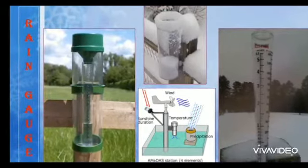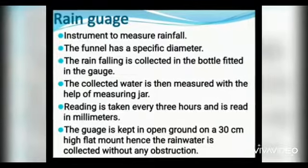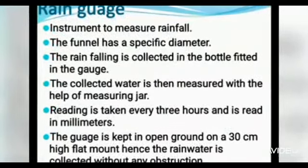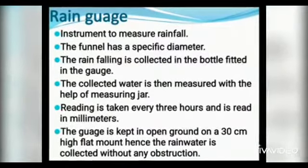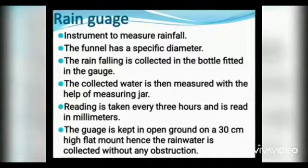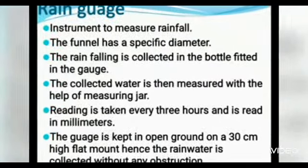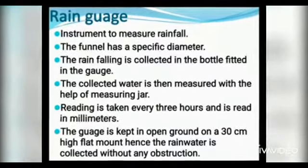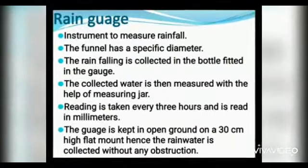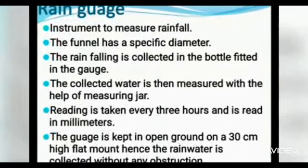We can now see the rain gauge that is used to measure rainfall. The instrument used to measure rainfall is called a rain gauge. See figure 5.8 in your textbook. The funnel used in the rain gauge has a specific diameter, and the rain falling into this funnel is collected in a bottle fitted in the gauge. The collected water is then measured with the help of a measuring jar.